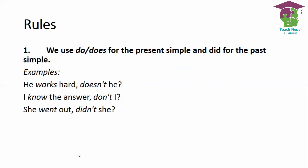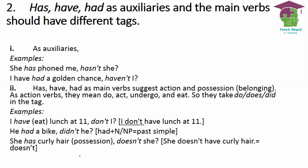For example: 'I know the answer, don't I?' — 'know' is base form so 'do' is used, giving 'don't I'. 'She went out, didn't she?' — 'went' is past form of 'go', and the past form of 'do' is 'did', so since the statement is positive, we write 'didn't'.